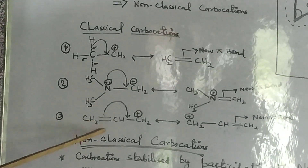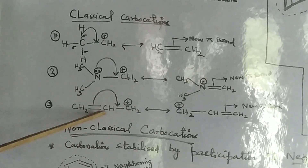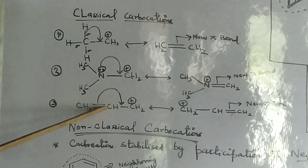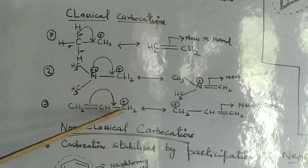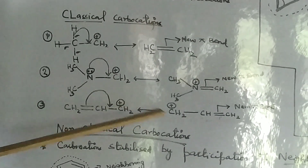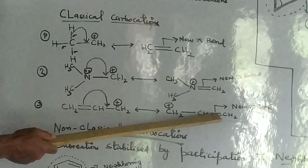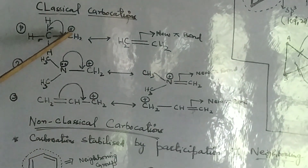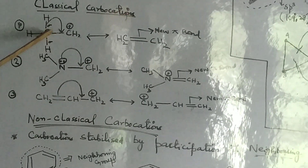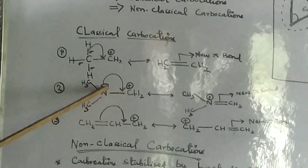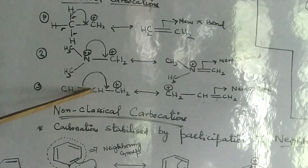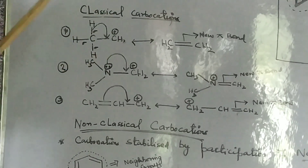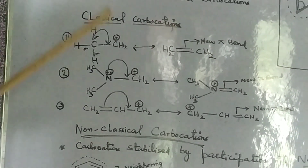In the third example, we have the allyl carbocation: CH2=CH-CH2+. Here the terminal carbon bears the positive charge. The adjacent carbon-carbon double bond provides pi electrons to stabilize this carbocation, and again there is formation of a new pi bond. So in all three examples, carbocations were stabilized either by movement of carbon-hydrogen sigma electrons, or by a lone pair of electrons, or by the presence of pi electrons. These types of carbocations are called classical carbocations, and they are mostly found in organic reactions.